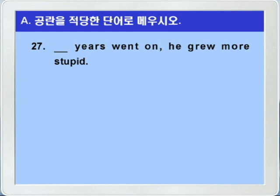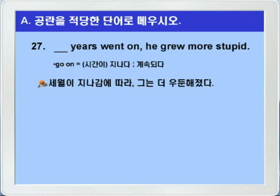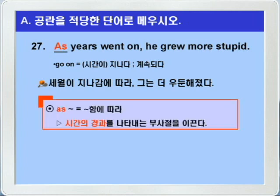27번입니다. go는 시간이 지나다, 계속되다, 이런 뜻이고 grow는 become의 뜻이 있으니까, blank years went on, 세월이 지나감에 따라, he grew more stupid, 그는 더 우둔해졌다. 이런 의미의 문장인데요. 그래서 blank에는 as가 들어가면 되겠습니다. as는 뭐뭐함에 따라, 이런 의미로 시간의 경과를 나타내는 부사절을 이끌 수가 있습니다.